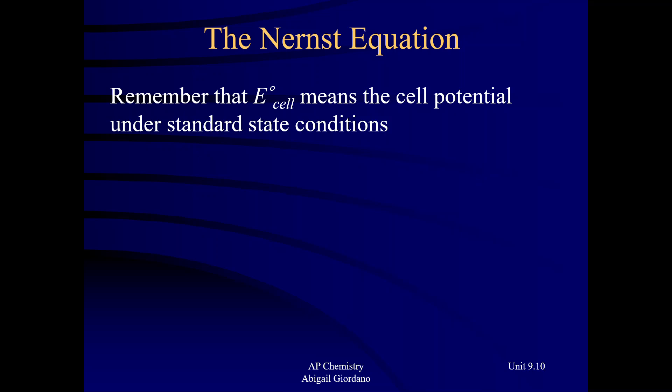So the question is: can you have an operating galvanic cell — a battery — if some part of those standard state conditions are not standard? Like what if the temperature isn't 25 degrees, what if it's 26 degrees? Does that mean we can't figure out how much voltage is coming out of that battery? No, we can.